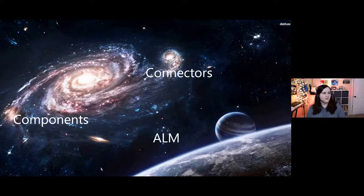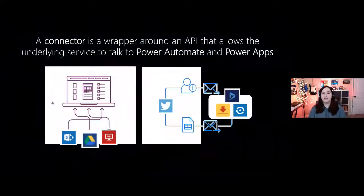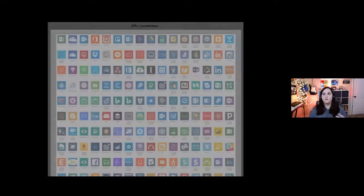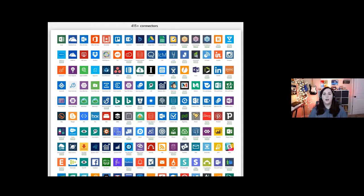Let's start with connectors — to me, this is the biggest and easiest way to extend your Power Platform applications with pro dev skills. The Power Platform runs on connectors — that's how it talks to all services. A connector is just a wrapper around an API that allows the underlying service to talk to Power Automate and Power Apps. Right now there are over 415 different connectors — not just Microsoft services like Excel, OneDrive, and SharePoint, but also SaaS services like MailChimp, Salesforce, and DocuSign.